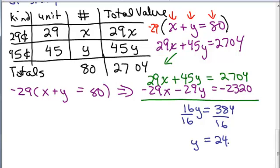Now, what did the Y stand for? Well, if we look up here, we see the Y was the number of the 45-cent stamps. So now we know how many 45-cent stamps we have if we did this correctly. But we also have to figure out how many 29-cent stamps there are.